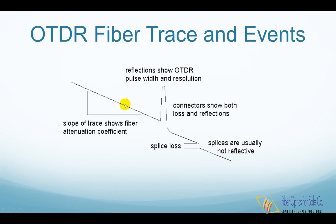The slope of the fiber trace shows the attenuation coefficient of the fiber and is calibrated in dB per kilometer by the OTDR. Connectors and splices are called events; both should show a loss, but connectors and mechanical splices will also show a reflective peak. The height of the peak indicates the amount of reflection at the event, unless it is so large that it saturates the OTDR receiver — then the peak will have a flat top and a tail on the far end, indicating the receiver was overloaded.